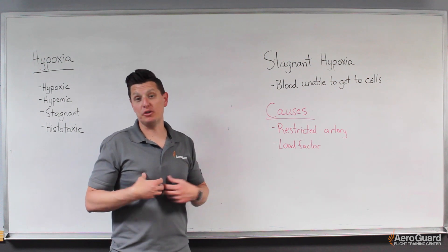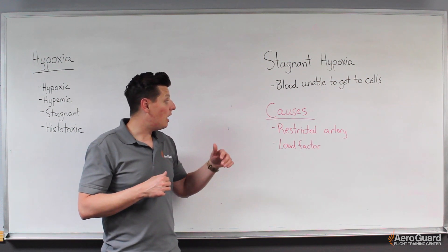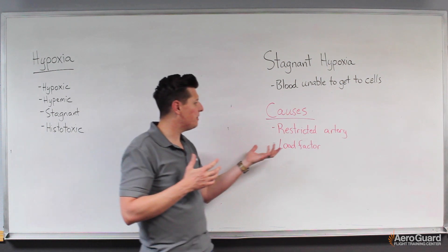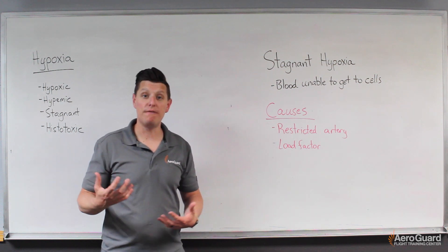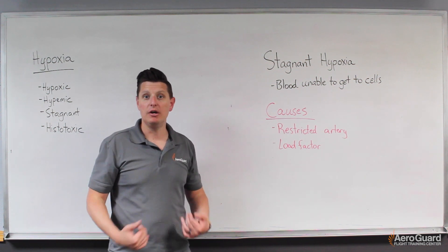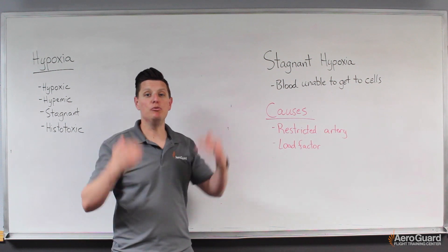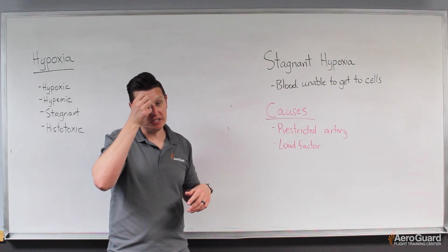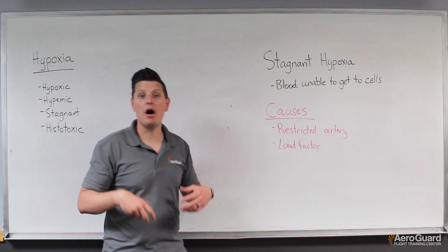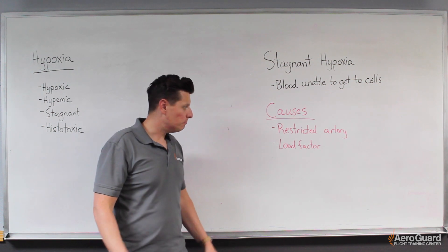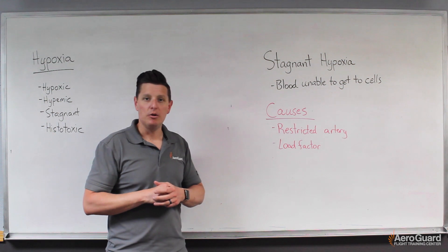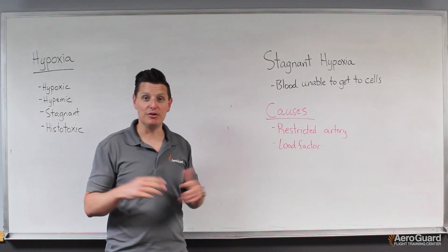Other causes include physiological issues with blood vessels themselves, or a heart condition where the heart can't pump adequate volumes of blood. More common in aviation is load factor — during a high-G maneuver, blood is forced downward, away from the head, which prevents blood from reaching all the cells that need it.